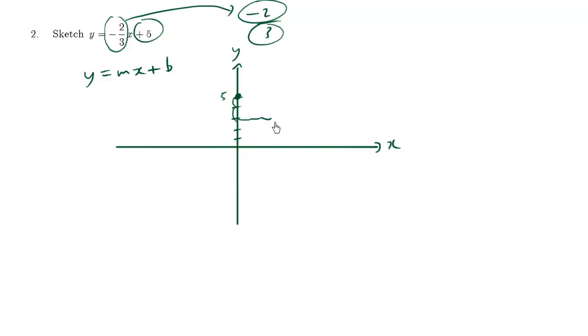And the run here is positive, so we're going to go right three. One, two, three. So this here is the other point that it's going to go through. So if we were to just connect the dots, this here is what the line would look like. This here is y equals negative two thirds x plus five.